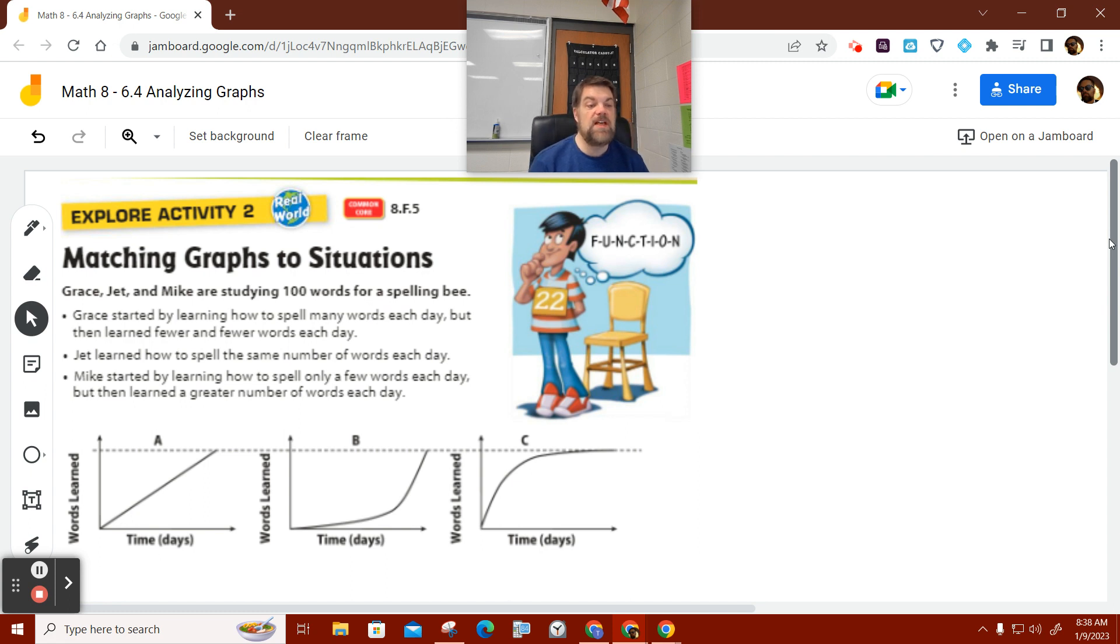It said Grace started by learning how to spell many words each day, then learned fewer and fewer words each day. Jet learned how to spell the same number of words each day.